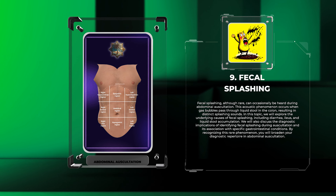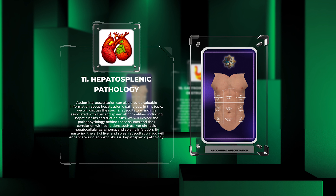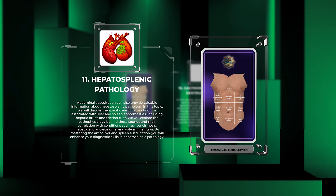Abdominal auscultation can also provide valuable information about hepatosplenic pathology. In this topic, we will discuss the specific auscultatory findings associated with liver and spleen abnormalities, including hepatic bruits and friction rubs. We will explore the pathophysiology behind these sounds and their correlation with conditions such as liver cirrhosis, hepatocellular carcinoma, and splenic infarction. By mastering the art of liver and spleen auscultation, you will enhance your diagnostic skills in hepatosplenic pathology.